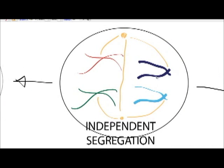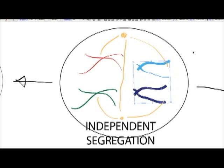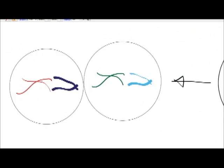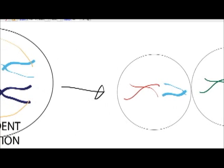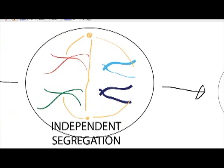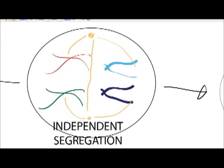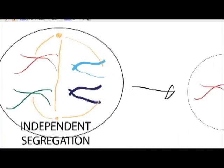However, independent segregation means that these two cells can be arranged differently, because this all happens quite randomly. The light blue cell could be at the top from our view, producing completely different cells — in this case a red and a light blue, and a green and a dark blue. Because meiosis produces large numbers of gametes, this variation is quite significant.